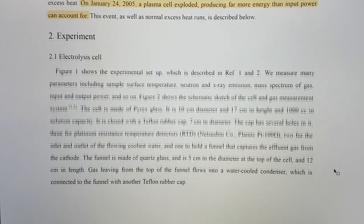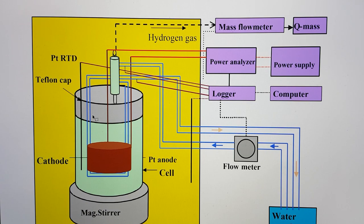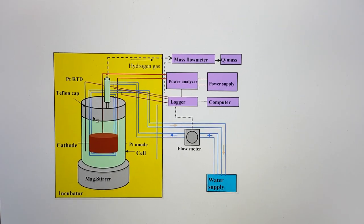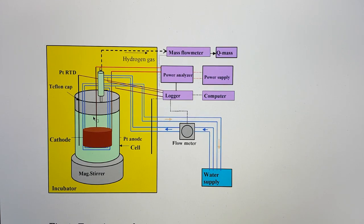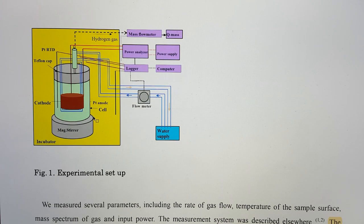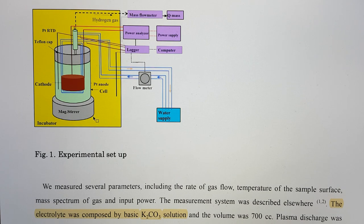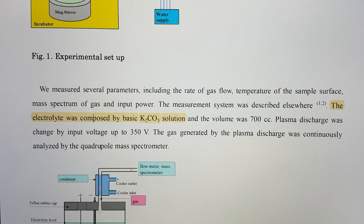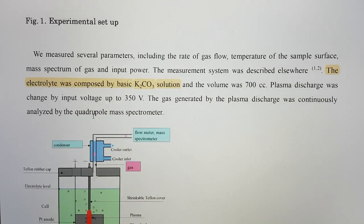They describe the apparatus. This is their typical experiment. The important thing is they had a magnetic stirrer at the bottom. The electrolyte was composed of H2O and potassium carbonate, K2CO3, and the discharge was enabled by an input voltage up to 350 volts.